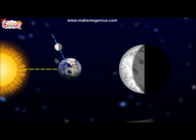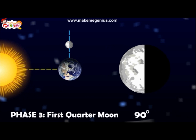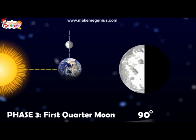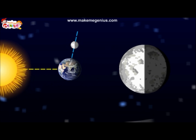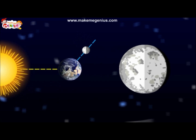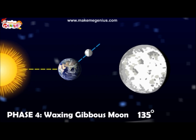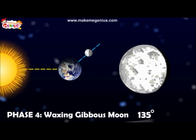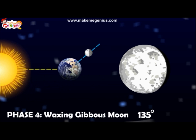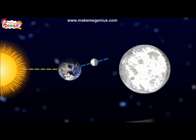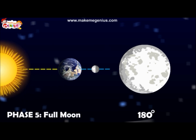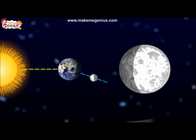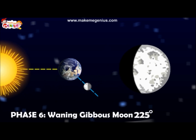Phase 3 is called the first quarter. In this phase, the moon appears half lit to us. Phase 4 is the waxing gibbous moon. In this phase, the moon appears more than half lit — the moon shows a hump. Phase 5 is the full moon. Beautiful and poetic.